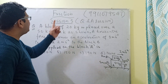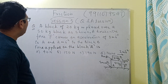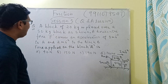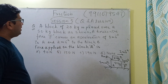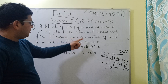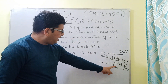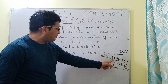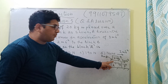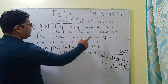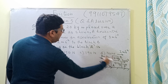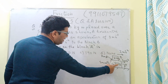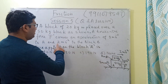Welcome back students, this is session 5 from the chapter of friction and this is the Q&A session. I have taken one question from one of my reference books. The question is: a block of 20 kg is placed over a 50 kg block as shown in the figure. A horizontal force F is applied on block A, which causes an acceleration of 3 m/s² to block A and 2 m/s² to block B.